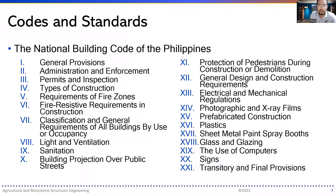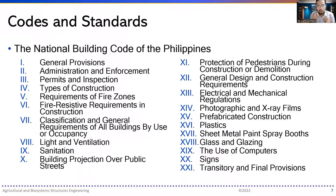Number 15 is prefabricated construction. Plastics are dedicated a chapter. Sheet metal paint, spray booths, glass and glazing, the use of computers, signs, and lastly, transitory and final provisions. There are corresponding IRRs — implementing rules and regulations — that put the law into place, because this is a presidential decree; the implementing rules were revised later on.